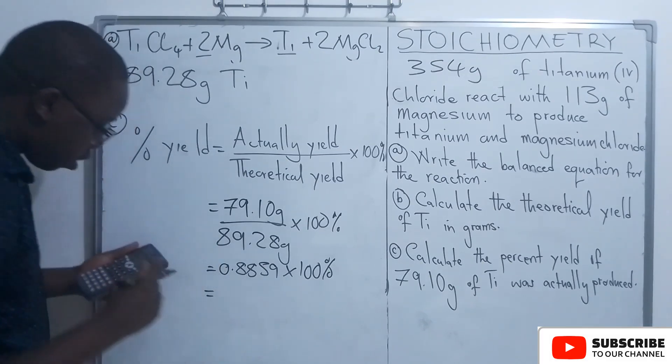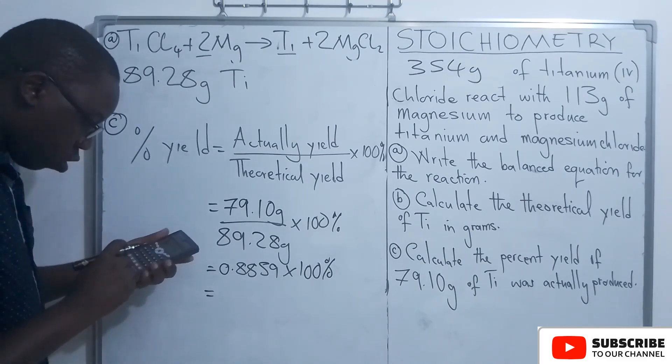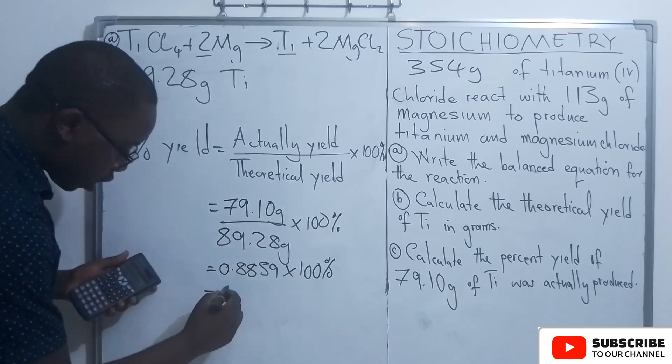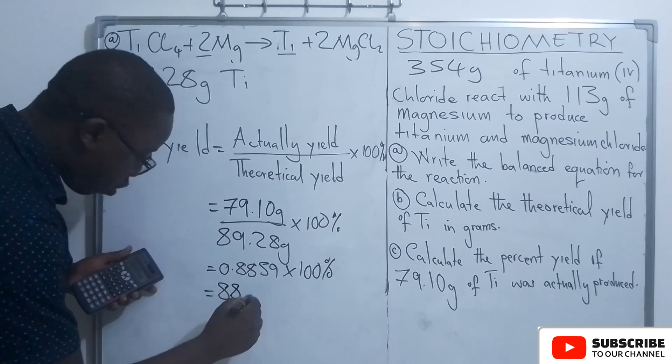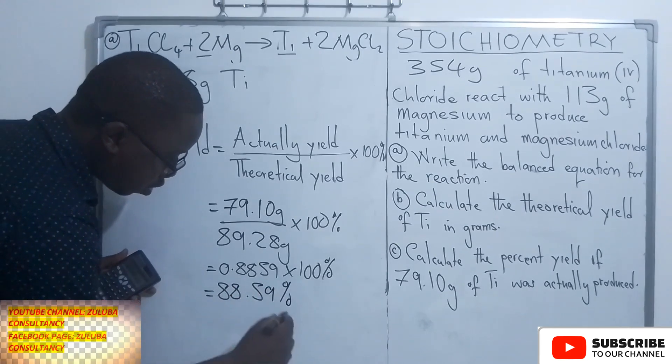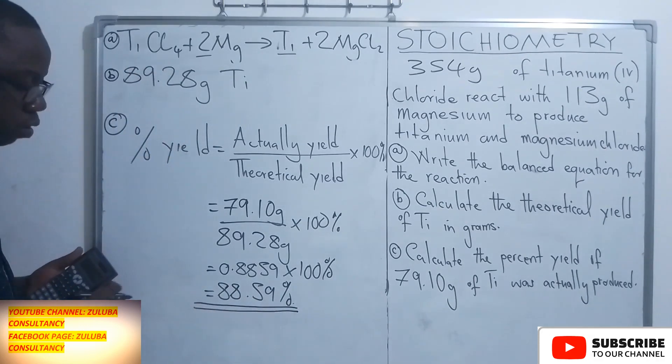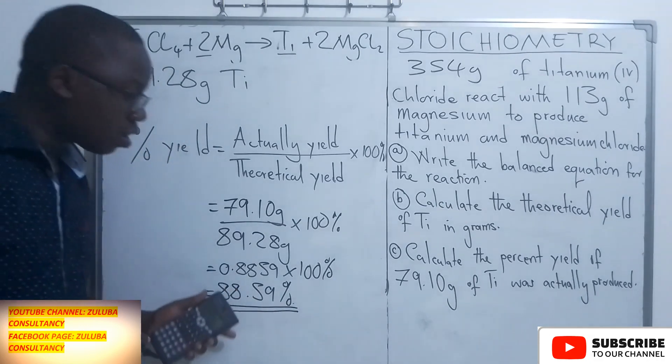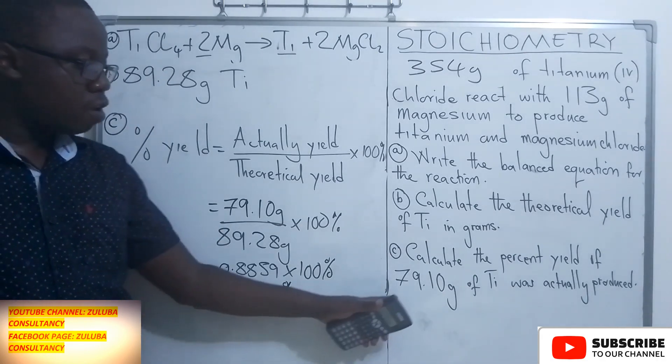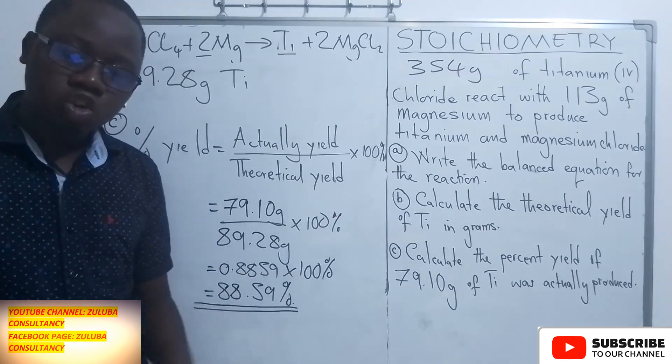So when we are saying 0.8859 multiplied by 100%, this is the percentage yield. So this is the percentage yield that can be produced if 79.1 grams was the actual product.